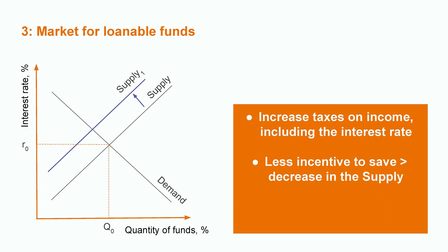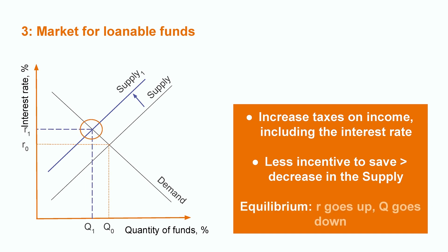Now, imagine that the government decided to increase taxes on income, including on interest income. This reduces incentives to save. As a result, supply decreases — it moves to the left to Supply 1 on your screen. The equilibrium rate moves from R0 to R1, and the equilibrium quantity moves from Q0 to Q1. Now there is less supply, and as a result, fewer funds will be loaned and at a higher rate.